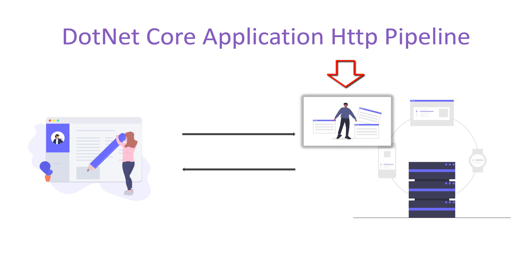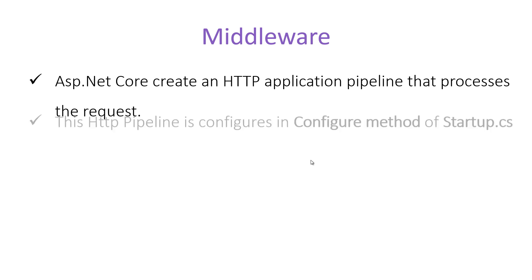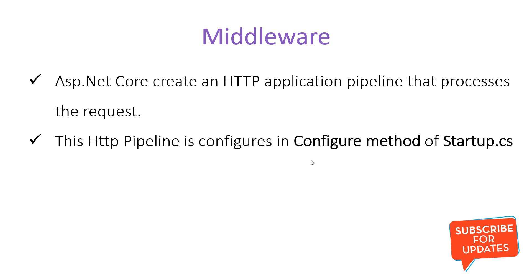Before hitting the controller, the request has to pass through these components. ASP.NET Core creates an HTTP application pipeline that processes the request. In each ASP.NET Core MVC application there is a pipeline called the HTTP application pipeline, which is responsible for handling all requests and responses. This HTTP pipeline is configured in the Configure method of Startup.cs — in every application by default we have a startup class, and inside that startup class we have a Configure method where all the components of the HTTP pipeline are written.